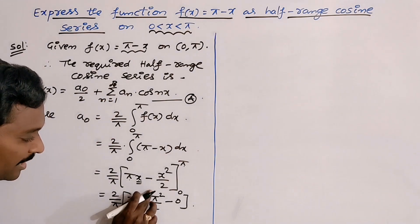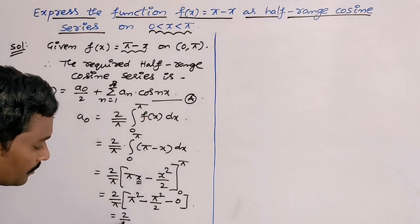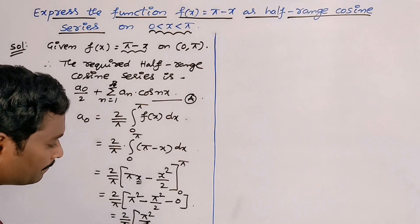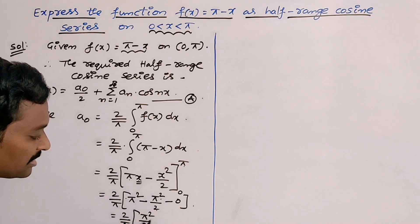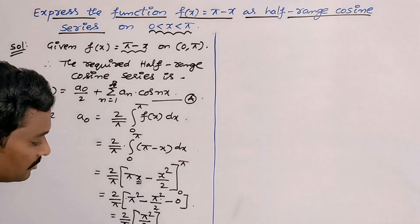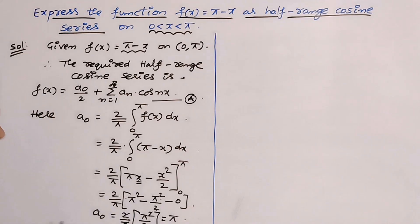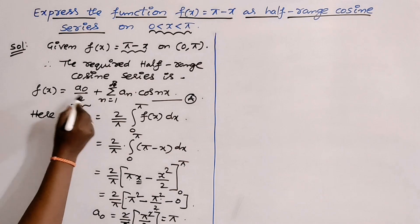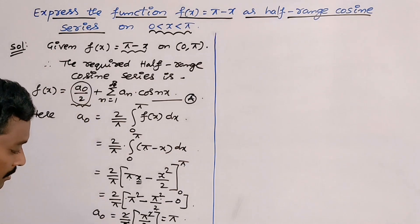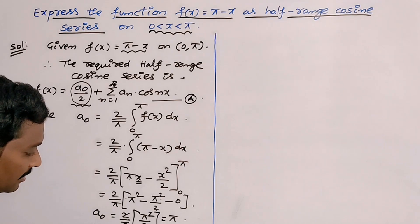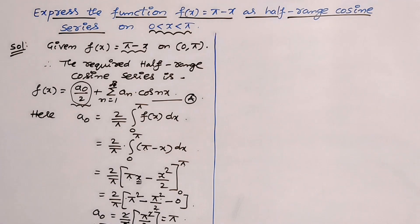What is π² - π²/2? It would be π²/2. By taking the LCM to 2, π² - π² would be π², π²/2. So we are observing that 2 getting cancelled, π getting cancelled. So the value of a₀ is π. But in the first part of the Fourier series, half-range cosine series, first term is a₀/2. So what is the a₀/2 value? It would be π/2. Divide with 2 on both sides. Now it is enough to find out the value of aₙ.